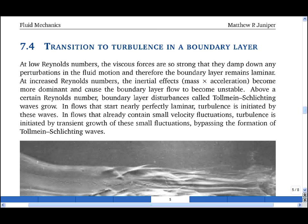As the Reynolds number in a boundary layer increases, the inertial effects become more dominant relative to the viscous effects, and this causes the boundary layer flow to become unstable.